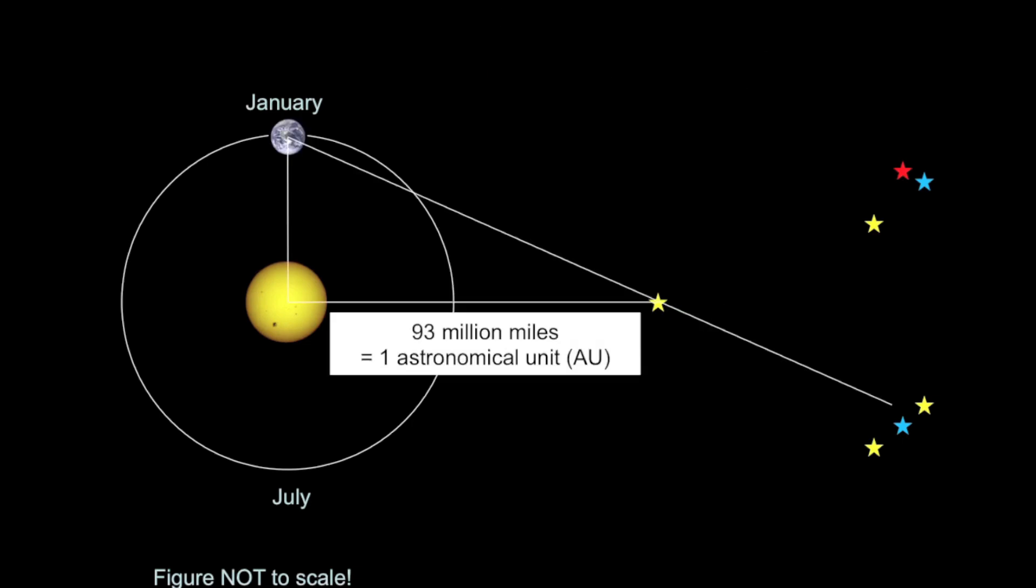There's something else we can do here. We can analyze a triangle that connects the Earth to the Sun to the nearby star. The distance from the Earth to the Sun on average is well known. It's 93 million miles, and astronomers define this distance to be what we call an astronomical unit, 1 AU.